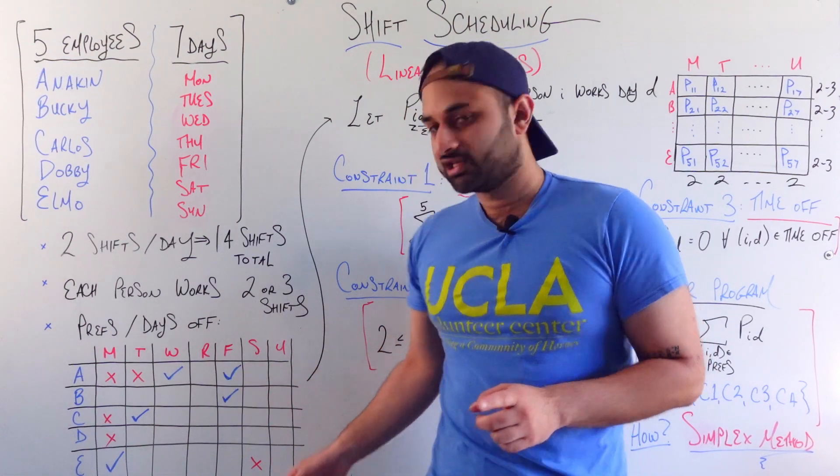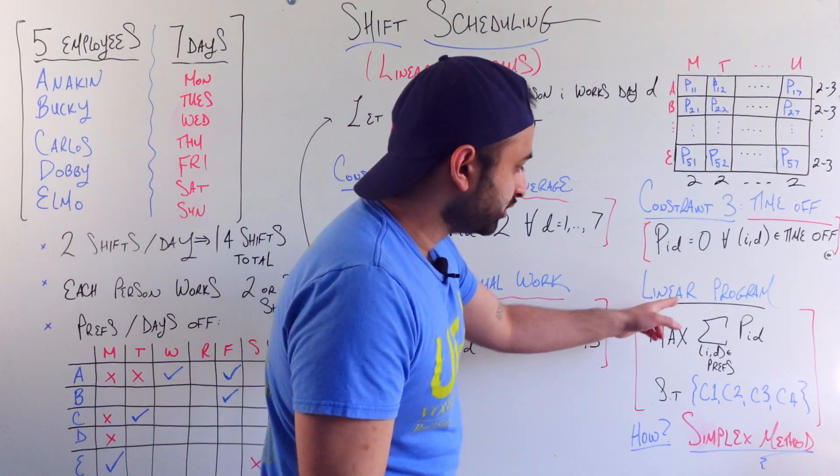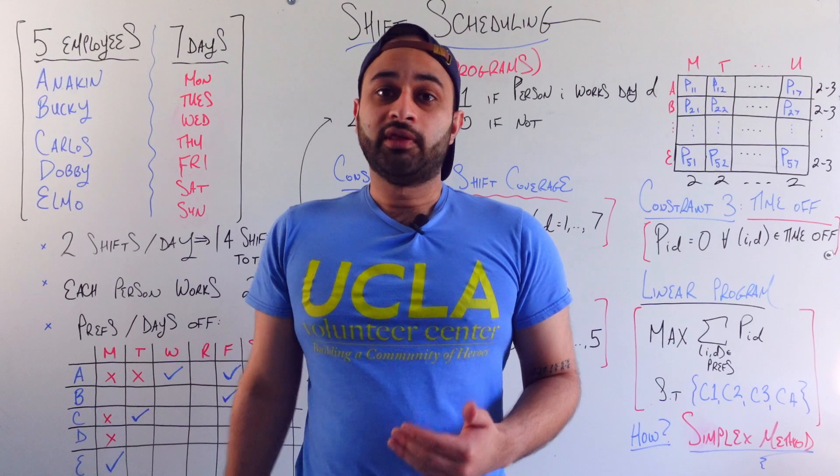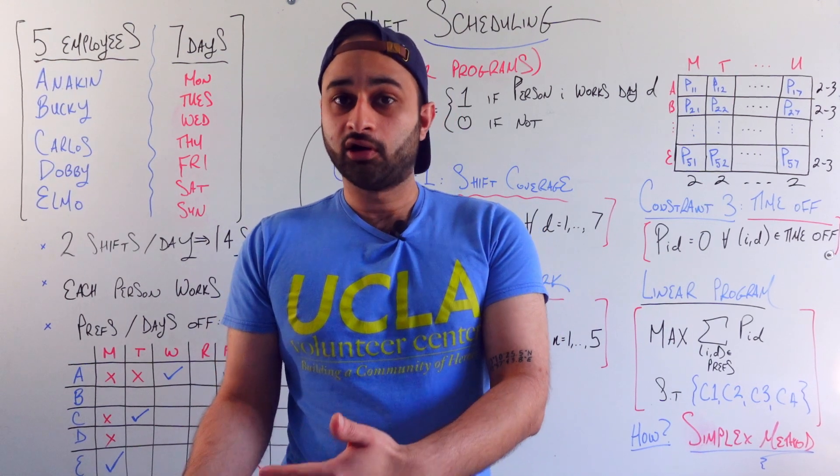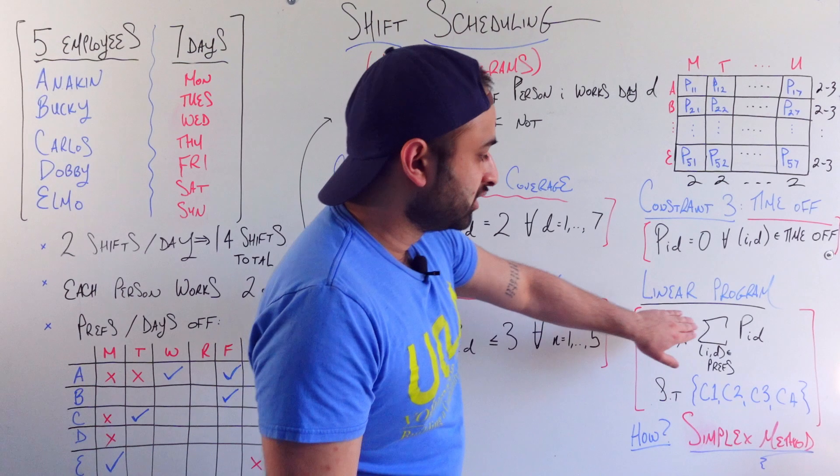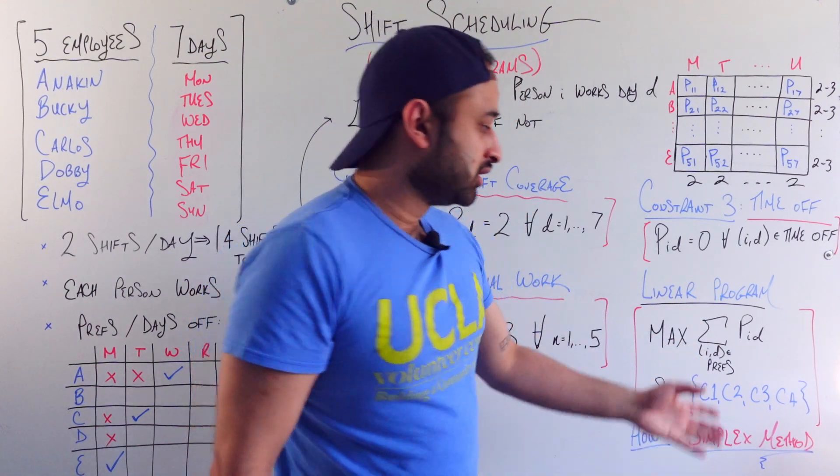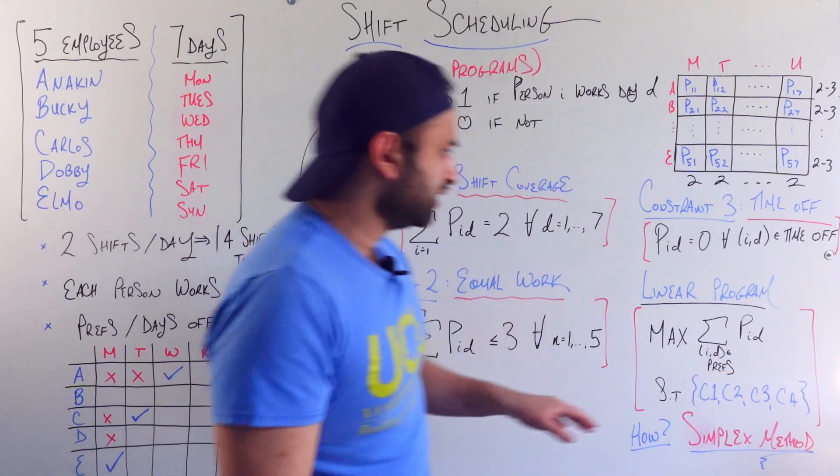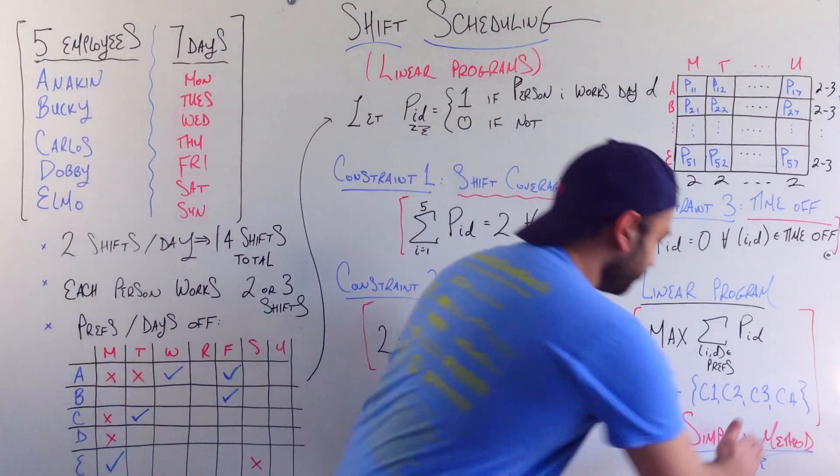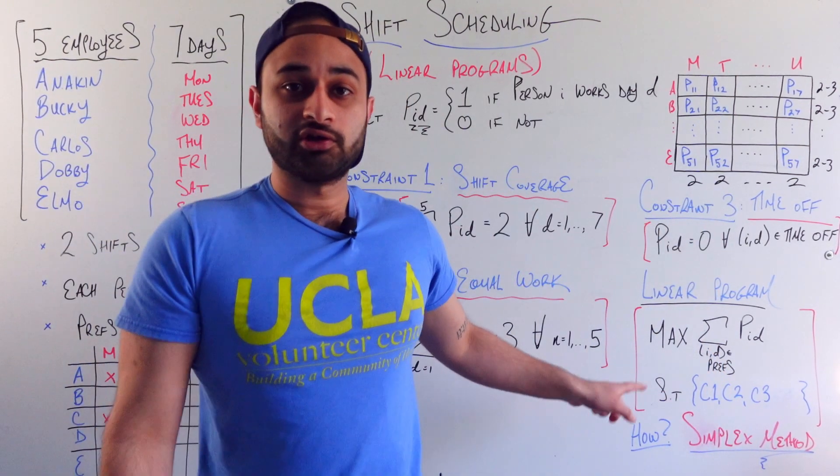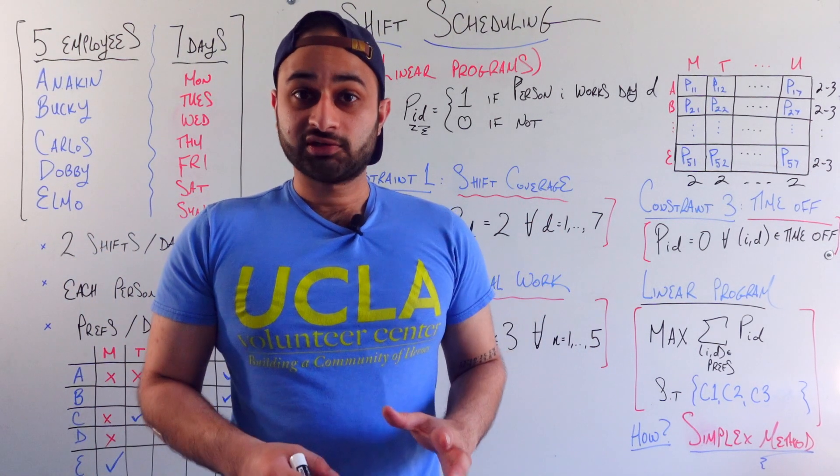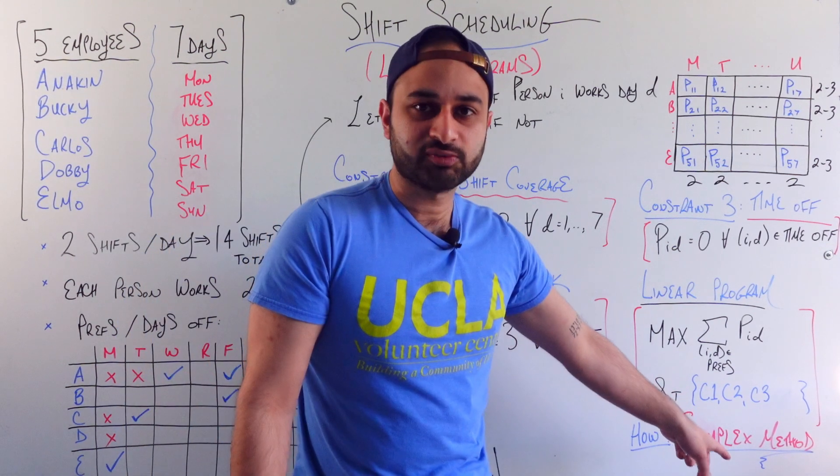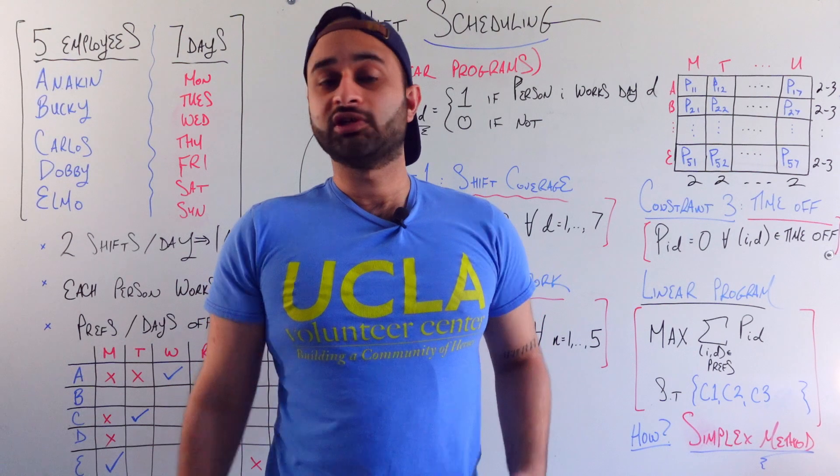And so what is our objective function here? That is where the last piece of the puzzle comes in, where we asked, hey, do you want to work that day? So we take their preferences, and we sum up all their preferences. So basically, if there's a checkmark on a given combination of person and day, then we would love to match that in our objective function, which is why we would like to maximize the sum over all pairs of preferences for all these variables. And that's going to be the best schedule, such that all these constraints are met. And how do we actually solve this? Again, not getting too deep into it, but you can look up something called the simplex method, which is designed to solve these linear programs extremely efficiently.